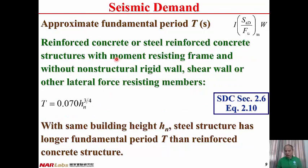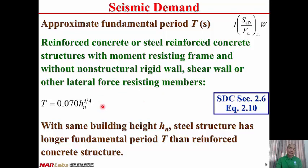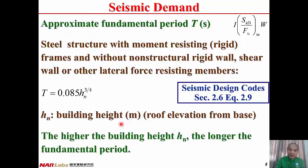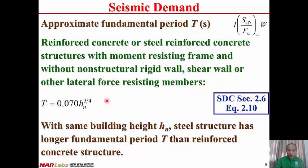For a reinforced concrete or steel-reinforced concrete structure with a moment-resisting frame and without any other lateral force-resisting members such as non-structural rigid walls, shear walls, or braces, from seismic design code equation 2-10: T = 0.07 × HN^(3/4). Therefore, with the same building height HN, a steel structure (coefficient 0.0285) has a longer fundamental vibration period than a reinforced concrete structure (coefficient 0.07).